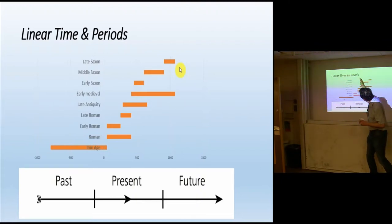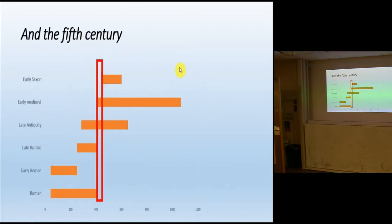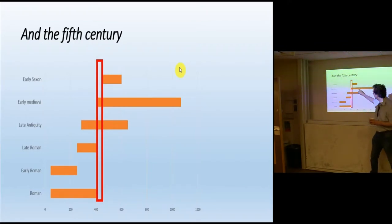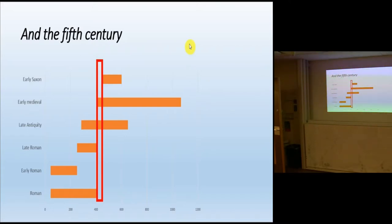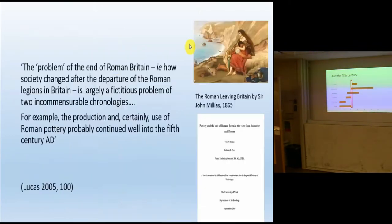One of the things we can see when we look at these divisions of time is this break that runs through the 5th century. Lots of our periods end and start in the 5th century. The only one that doesn't is late antiquity, and I've put that on there just as a nod to some of the things myself and Rob Collins were thinking about more than ten years ago. For a little while we tried to get people to use the term 'late antiquity' because it avoided this fault line that runs through the 5th century.